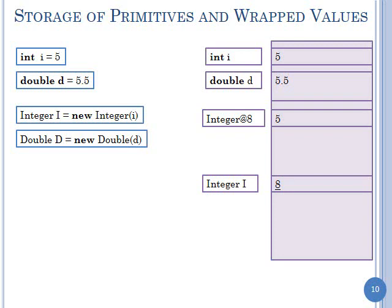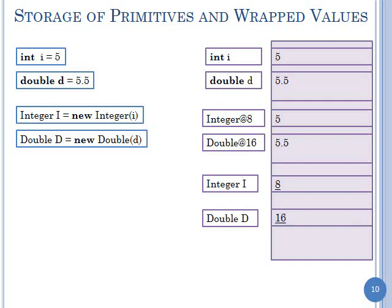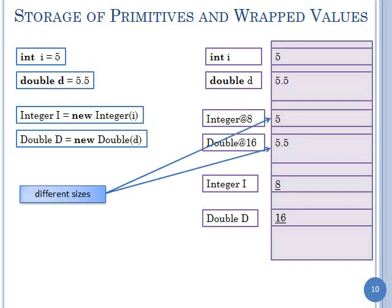Similarly, 'Double capital_D = new Double(d)' — doubles take a bigger slot since doubles are double the size of int, so the primitive value is much bigger. But the variable is the same size — all object variables are one slot, one pointer. Objects can be of different sizes, but object variables are always the same size.